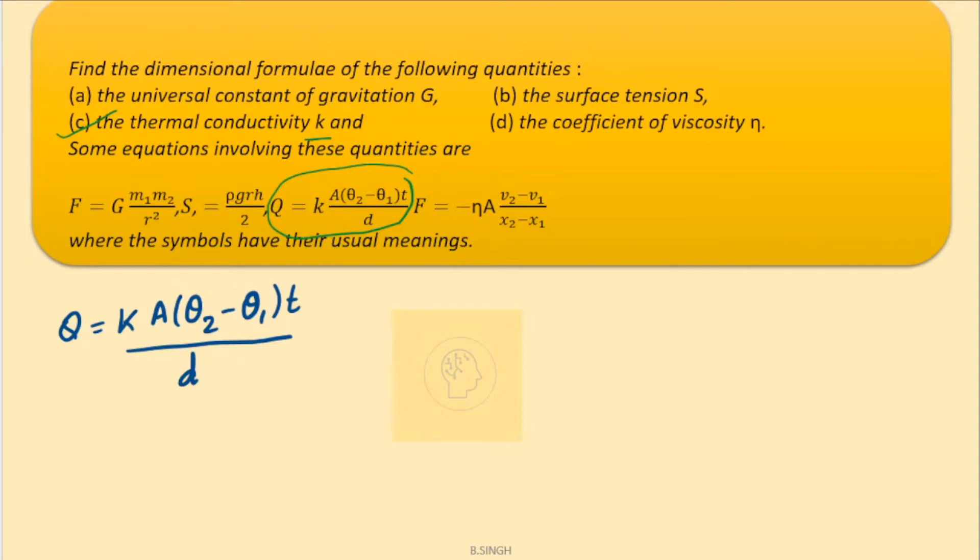So, here we can figure out the value of k by taking all the other parameters other side, qd whole divided by A into theta 2 minus theta 1 into t. Let me write this as equation 1.